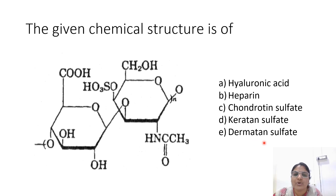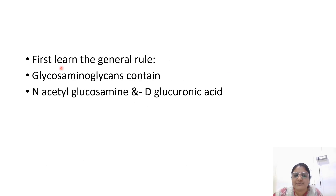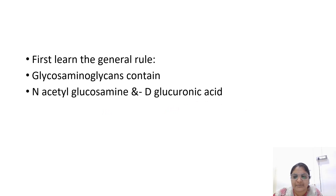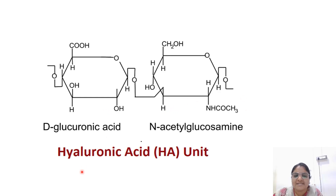So how are you going to remember the structure of glycosaminoglycans? First I will give you some tips. Learn the general rule that glycosaminoglycans contain N-acetylglucosamine and D-glucuronic acid. That is hyaluronic acid — the structure of hyaluronic acid contains D-glucuronic acid and N-acetylglucosamine.